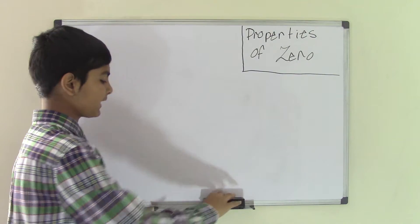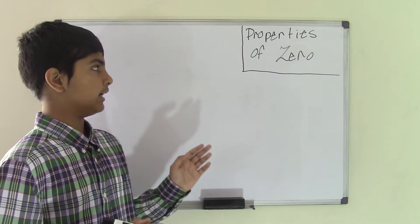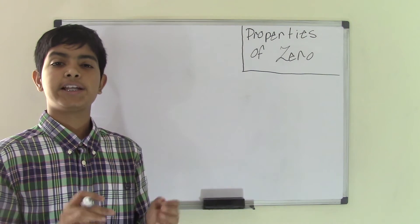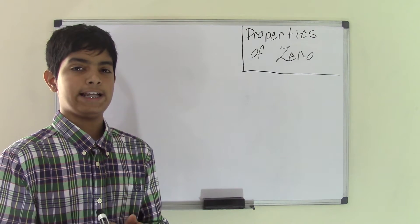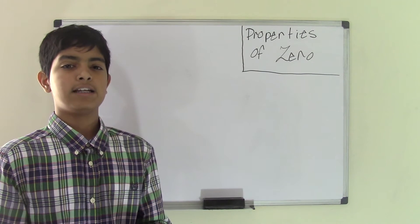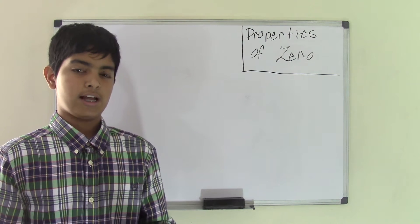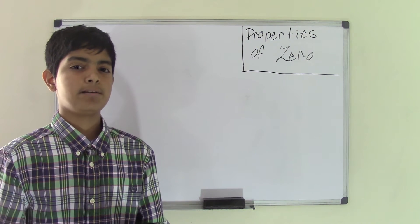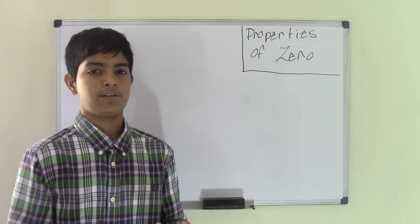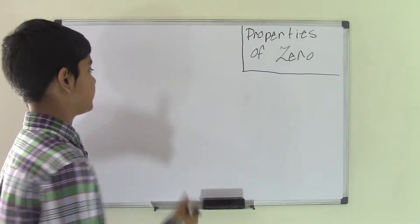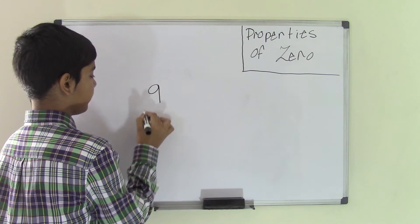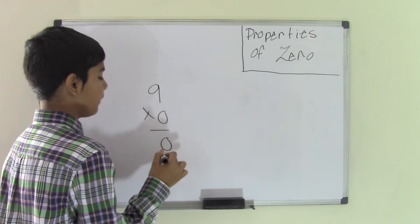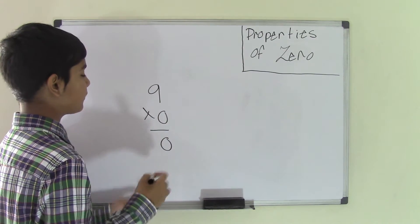Now, multiplication. The property of multiplying by zero states that if any number is to be multiplied by zero, the product is going to be zero itself. And if zero is to be multiplied by any number, the product is going to be zero itself as well. So let's take the number nine, and you have to multiply this by zero. The product is going to be zero.